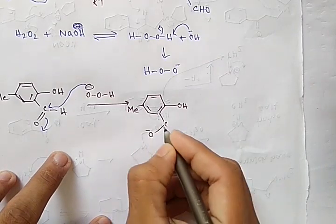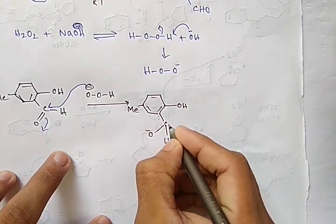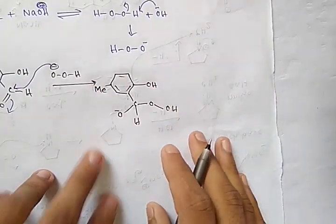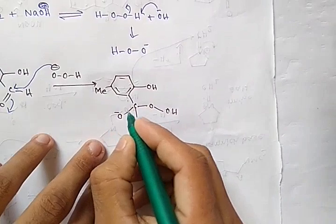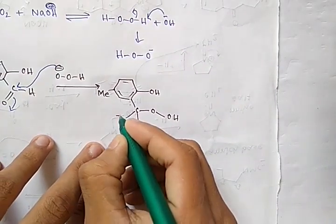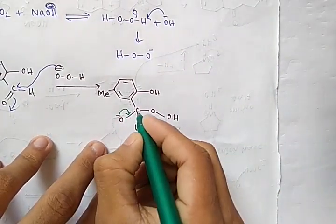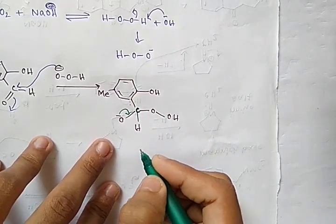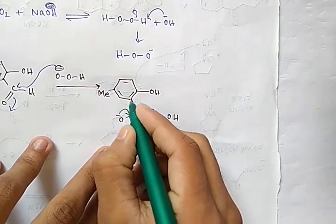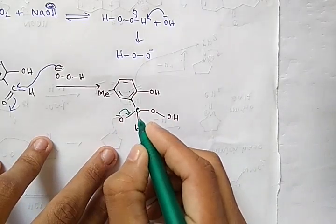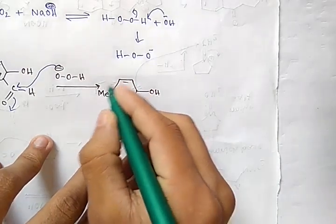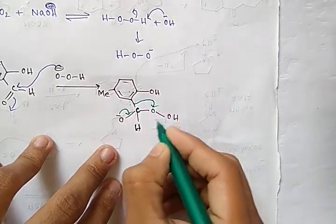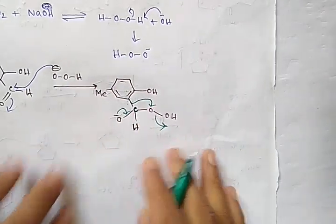After the peroxide ion attacks, we get an intermediate with O⁻, H, and an OOH group on the carbon. The valency of the carbon atom increases, so one of the groups undergoes migration based on migratory aptitude. The group migrates and the leaving group is removed from the system.